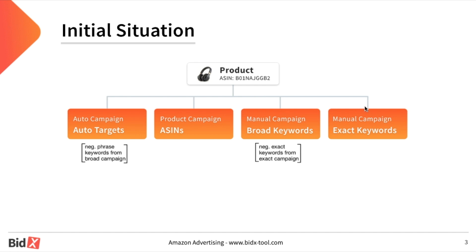You can see that all keywords from the broad campaign are excluded in the auto campaign as phrase negative keywords. Furthermore, all keywords from the exact campaign are excluded in broad as negative exact. In this way we make sure that a keyword and its search terms are only displayed by a single campaign, which guarantees that the performance data for a single keyword are not split.